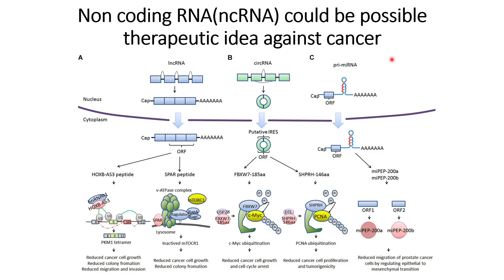These are some of the non-coding RNAs that could be possible therapeutic targets because of their functions against normal cancer cell growth rate, and also the way they play a role in suppressing migration properties or EMT characteristics. If you need to understand more about non-coding RNAs and their relation to cancer cell properties, you can go through the references provided in the description. That's all for this video, thank you for your time.